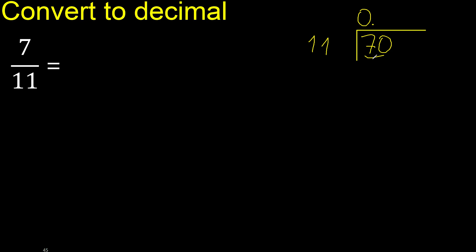70 is not less. Therefore, 11 multiplied by which number is nearest to 70 but not greater? 11 multiplied by 7 is 77. 77 is greater.